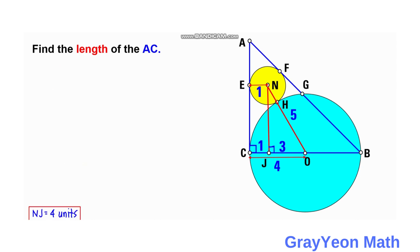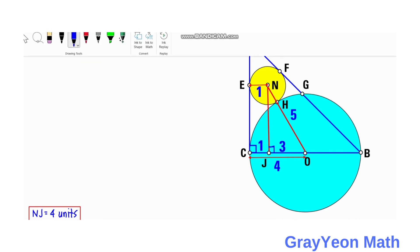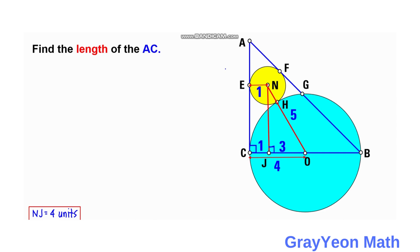Our next goal is to find the segment AE. AE is part of the segment AC that we are looking for. We already found segment NJ, which is also equal to EC.